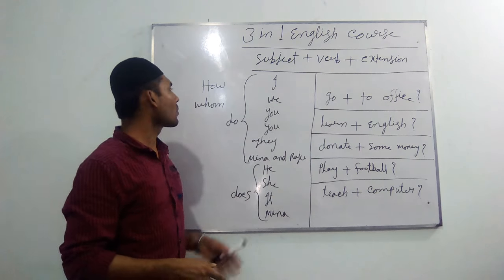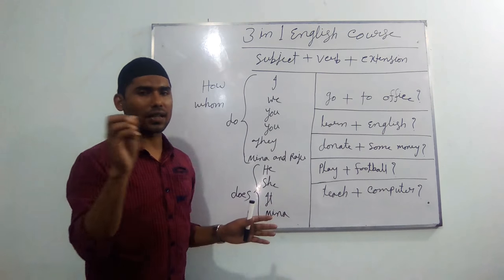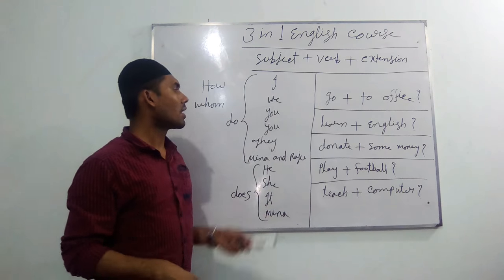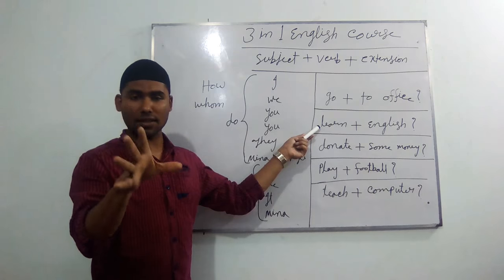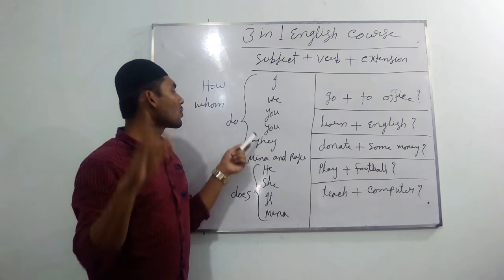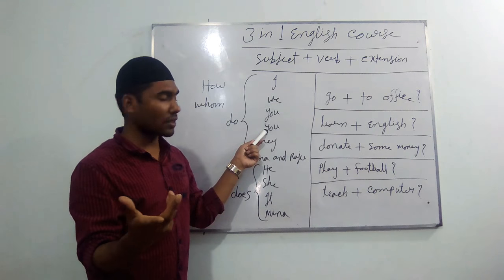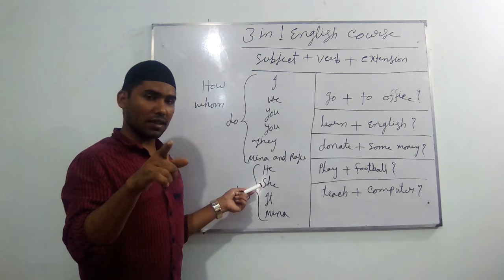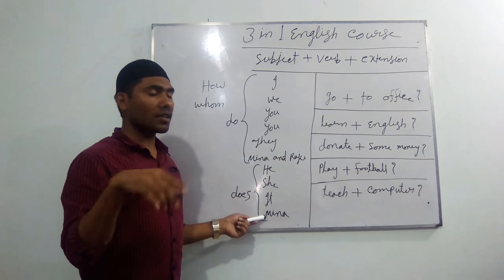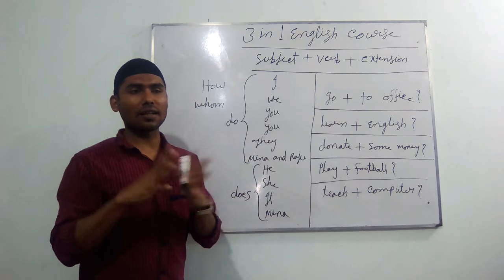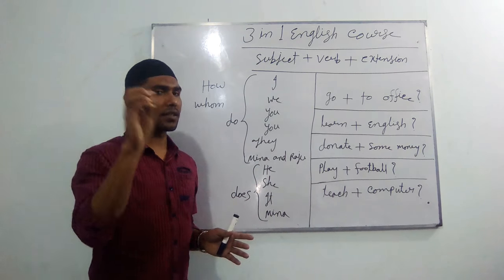By this way, we can practice using different verbs and extensions. Suppose: How do I learn English? Ami ki bhabe ingleji shikhi. How do you learn English? Tumi ki bhabe ingleji shikhi. How does she learn English? How does Mina learn English? Mina ki bhabe ingleji shikhi.